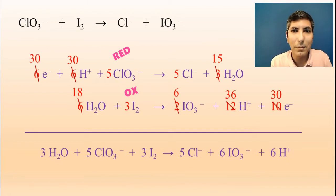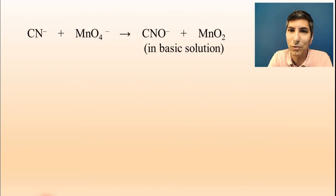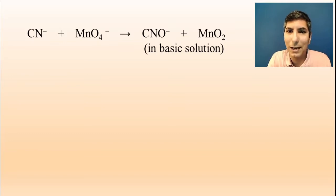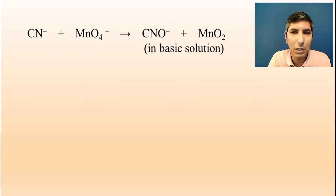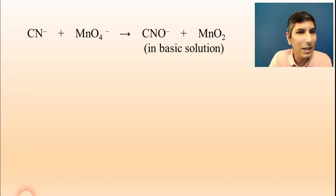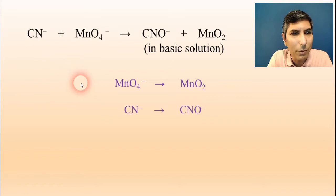Is there any way we can make this even more complex? Yes — we can look at a basic solution. In the previous examples the redox reactions took place in acidic solution. Most redox reactions do take place in acidic solution, but sometimes they take place in basic solution. The process is actually pretty much the same, with just a small additional step at the end. So I'm going to separate the reaction into two logical half reactions.